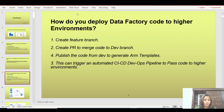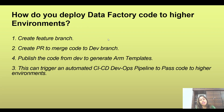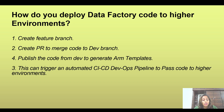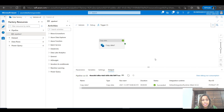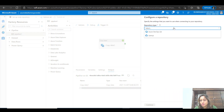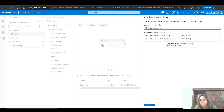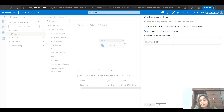The next question is: how do you deploy Data Factory code to a higher environment? This is a commonly asked question because someone who has worked on Data Factory would definitely know this. For the interview, the key point is that your Data Factory is integrated with a code repository. If you go back to the Data Factory portal, on the left-hand side there is an option to set up a code repository. You can select your DevOps account details and link your Data Factory to a DevOps repository by providing the configurations.